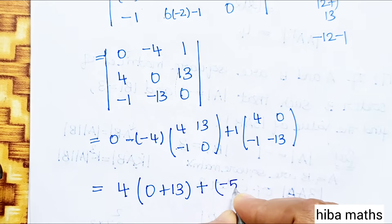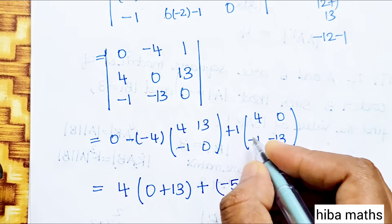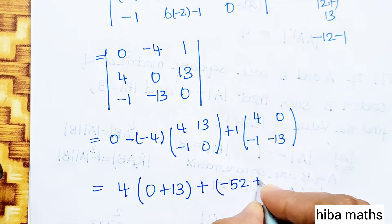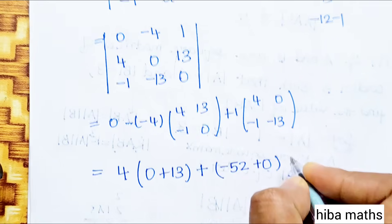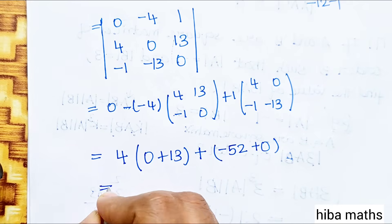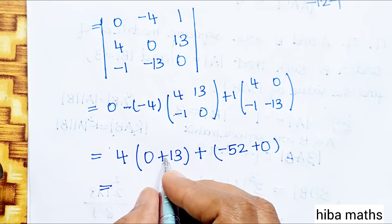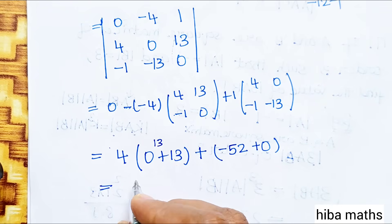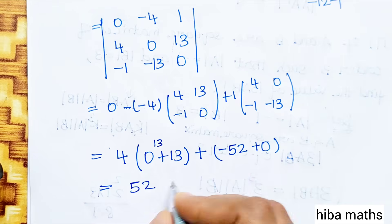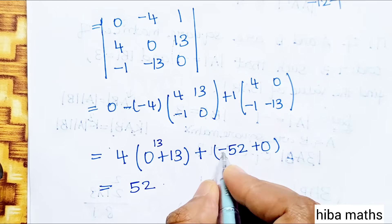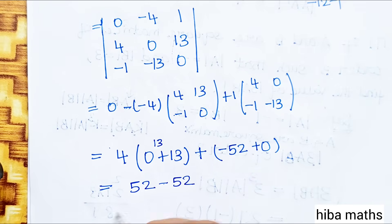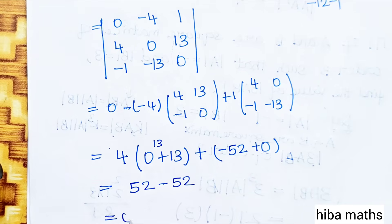We have 0 plus 52 minus 52, which gives 0 plus 13 plus 13 — after checking: 4 into 13 is 52 and minus 52. Plus and minus cancel, so the answer is 0.